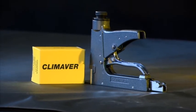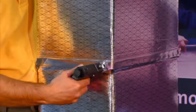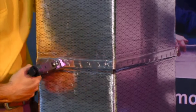The KlimaVair stapler is used to primarily fix the aluminium foil overlaps before taping.